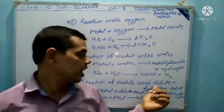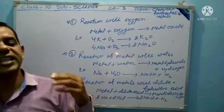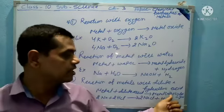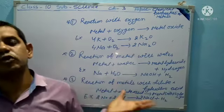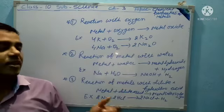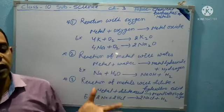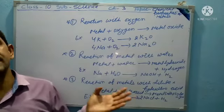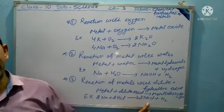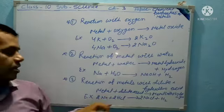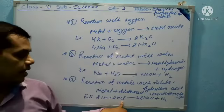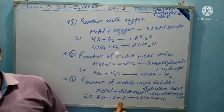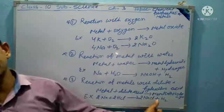The third reaction is the reaction of metal with dilute hydrochloric acid. Metal plus dilute acid produces metal salt plus hydrogen. In this reaction, sodium metal with dilute hydrochloric acid gives sodium chloride and hydrogen gas. So, sodium plus hydrochloric acid produces sodium chloride plus hydrogen.